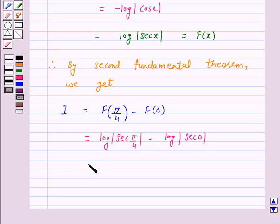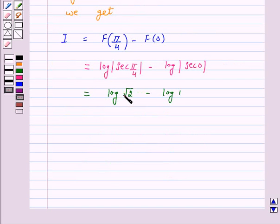And this is equal to log √2 minus log 1. Now, log m minus log n is equal to log m over n. So, this is equal to log of √2 upon 1.